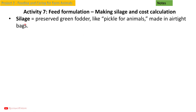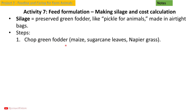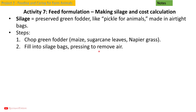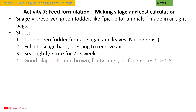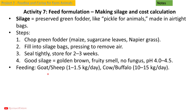Activity 7: Feed formulation — making silage and cost calculation. Silage is preserved green fodder, like a pickle for animals, made in airtight bags. Steps: First, chop green fodder such as maize, sugarcane leaves, or napier grass. Second, fill into silage bags pressing to remove air. Third, seal tightly and store for 2 to 3 weeks. Good silage is golden-brown with a fruity smell, no fungus, and a pH of 4 to 4.5. Feeding amounts: goat/sheep 1 to 1.5 kg per day; cow/buffalo 10 to 15 kg per day.